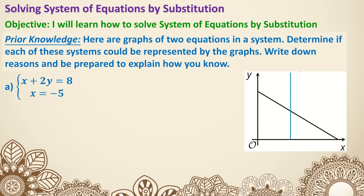Here's the prior knowledge. Here are graphs of two equations in a system. Determine if each of these systems could be represented by the graph. Write down the reason and be prepared to explain how you know. I would ask you to pause here and try to go through the first four questions related to graphing, and then come back to check your answers.